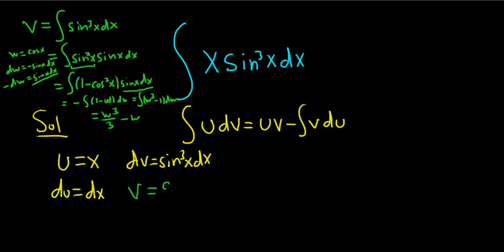So let's go ahead and write it down here. w was cosine, so this is cosine cubed of x minus cosine x. That's a lot of work for v. I'm going to put this in parentheses.